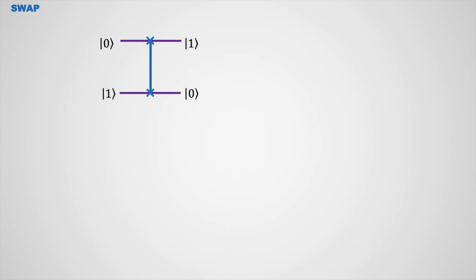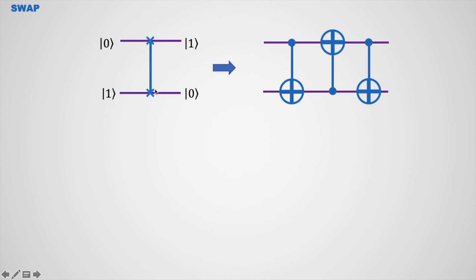This operation is done by this circuit. This is the decomposed circuit of a swap gate — a swap operation is basically composed of 2-qubit CNOT gates with this arrangement. Here you can see how it operates.